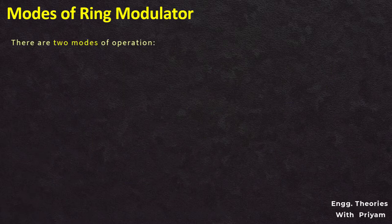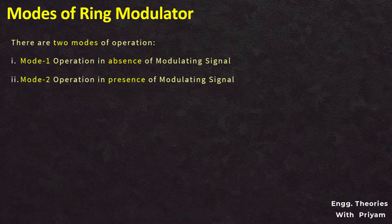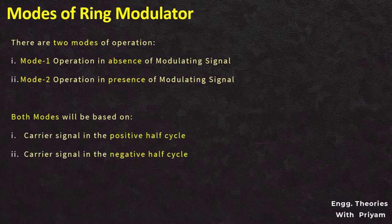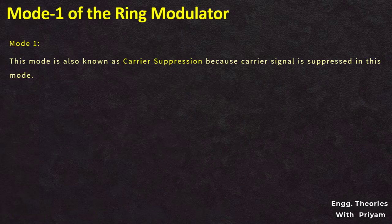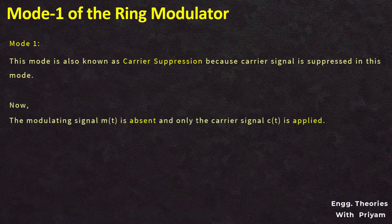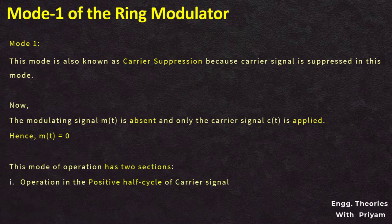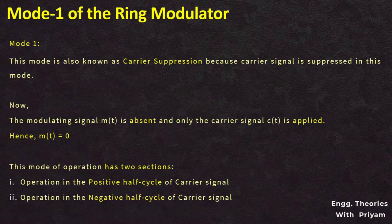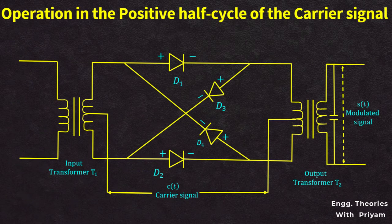There are two modes of operation. Mode 1 is performed in the absence of the modulating signal, and Mode 2 is performed in the presence of the modulating signal. Both modes are analyzed for the positive and negative half cycles of the carrier signal. Mode 1 is also known as carrier suppression, because the carrier signal is suppressed in this mode.